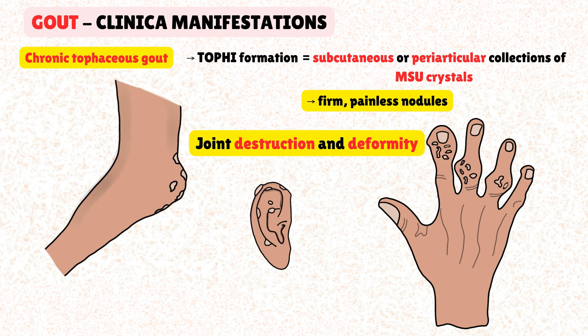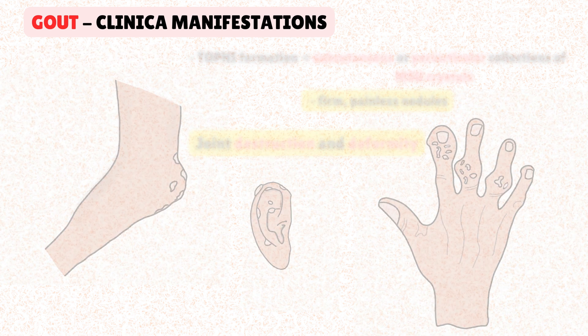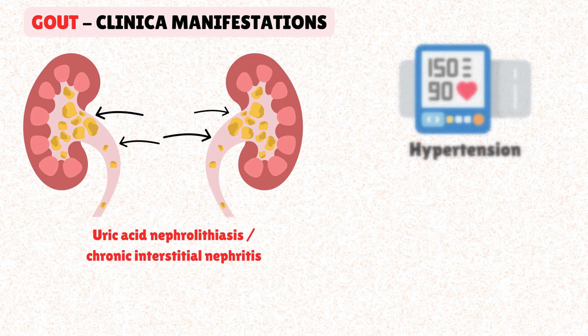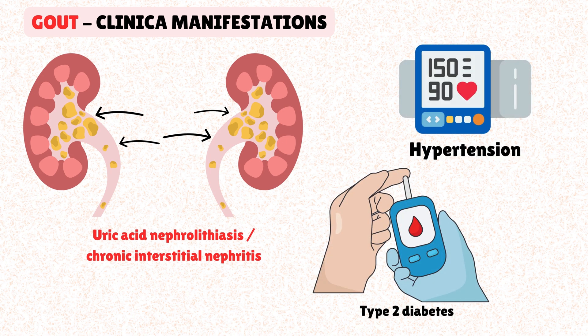Gout is also a systemic disease, and uric acid crystals can deposit in the kidneys, causing uric acid nephrolithiasis and chronic interstitial nephritis. It is also strongly associated with other comorbidities, including hypertension and type 2 diabetes.